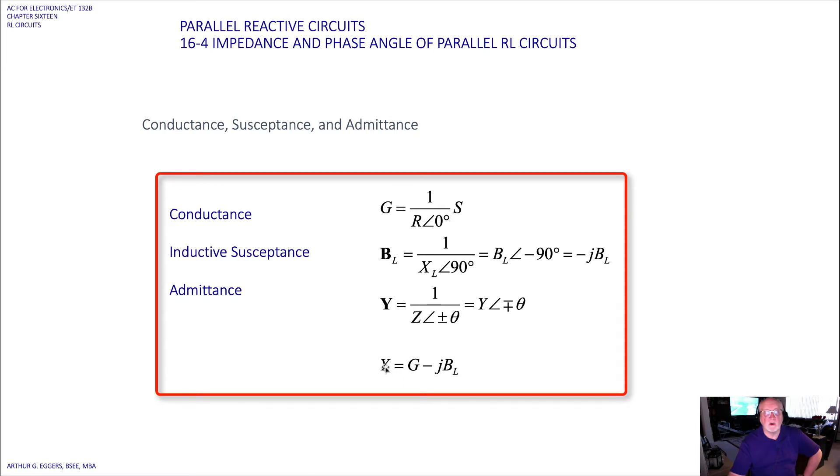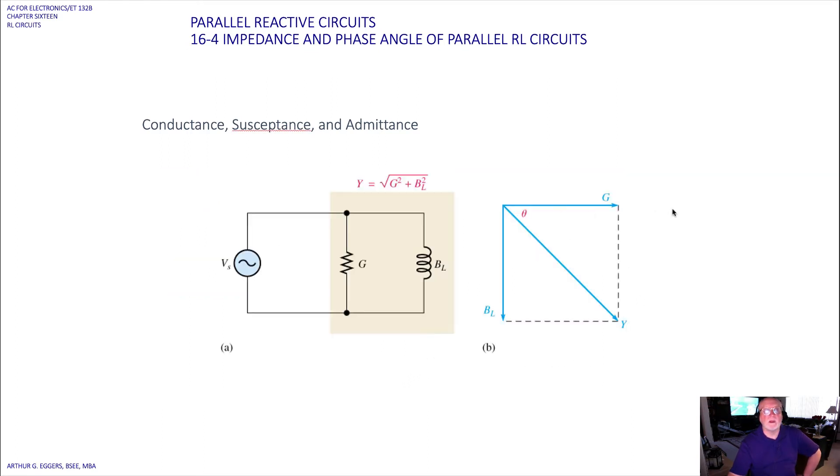This means G minus jB_L. So if we look at again our parallel circuit, we can see then that for a parallel circuit, just like we solved before, Y is equal to when we combine the two terms phasorally or vectorally: G squared plus B sub L squared, and we take the square root.